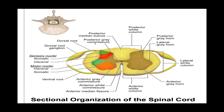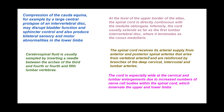This is the gray matter commissure — commissure meaning a communication. There is an anterior gray matter commissure and a posterior gray matter commissure. In the spinal cord, the commissures are gray matter commissures, compared to the white matter commissure in the brain — which is the corpus callosum in the cerebral hemisphere.